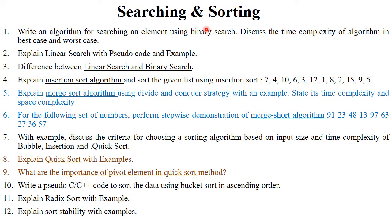The next important topic is searching and sorting algorithms. The first question is to write the algorithm of binary search and discuss its complexity — best case and worst case. You need to mention the definition, algorithm, and time complexity for six to eight marks. Next, explain linear search with pseudocode and example — mention the definition, pseudocode, and examples of your choice. Then the difference between linear search and binary search, generally asked for four to six marks.